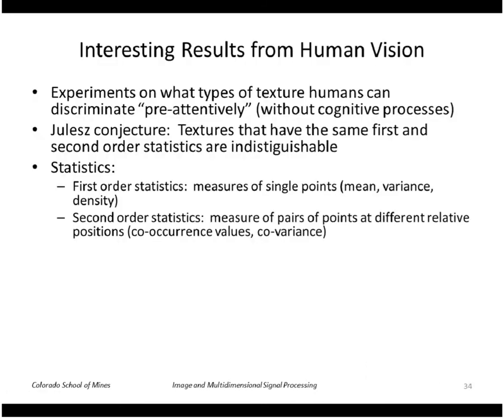I wanted to show some interesting results from human vision. Psychologists looked at what kinds of textures humans could discriminate pre-attentively, meaning quickly, without cognitive processes, without thinking or studying the images. What they came up with was that textures that have the same first and second order statistics are indistinguishable.